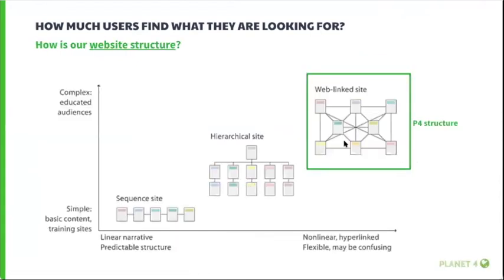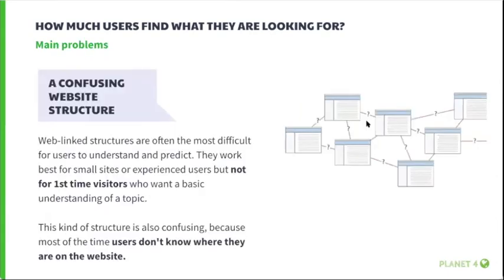To understand why some users still struggle to find content, let's take a deeper look at the website structure. Between different existing site structures, P4 is built with a web-linked site structure. Although the goal of this structure is to facilitate access to topics based on user initiatives, this kind can bring confusion. Web-linked structures are often the most difficult for users to understand and predict — they work best for small sites or experienced users, but not for first-time visitors who want a basic understanding of a topic. This structure is also confusing because users often don't know where they are on the website.